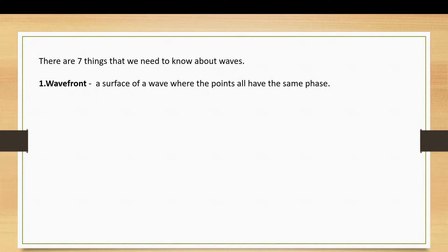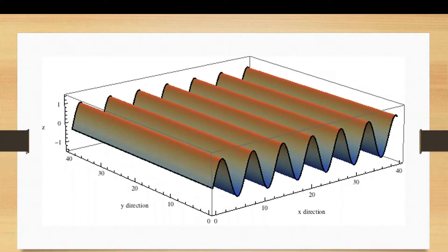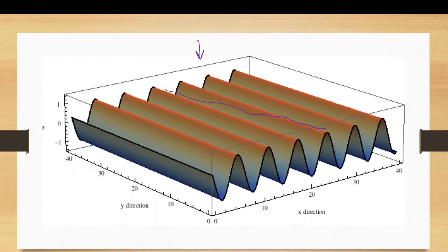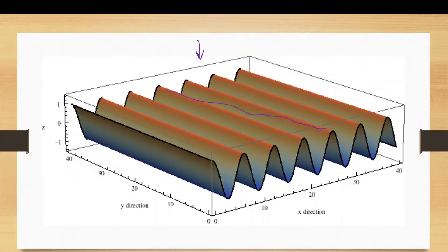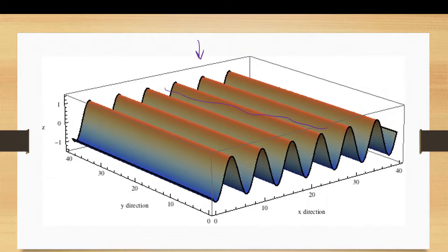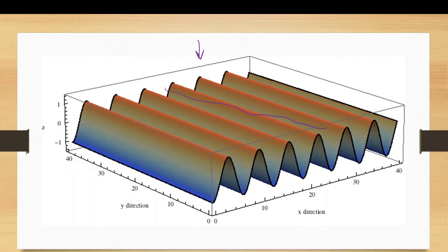For waves in general, there are seven things that we need to know. First of all, wave fronts. The official definition of a wave front is a surface of a wave where the points all have the same phase. If we look at this diagram here, imagine that you are looking down on this wave from the top. The wave front is this line that you see, like the ripple at the top of the wave. We use wave fronts particularly for diffraction experiments, which we will come to later in another video.